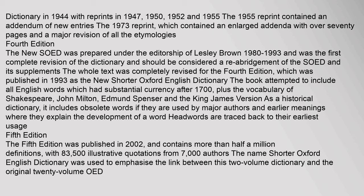The new SOED was prepared under the editorship of Leslie Brown (1980–1993) and was the first complete revision of the dictionary, and should be considered a re-abridgment of the SOED and its supplements. The whole text was completely revised for the fourth edition, which was published in 1993 as the New Shorter Oxford English Dictionary. The book attempted to include all English words which had substantial currency after 1700, plus the vocabulary of Shakespeare, John Milton, Edmund Spenser, and the King James version. As a historical dictionary, it includes obsolete words if they are used by major authors, and earlier meanings where they explain the development of a word. Headwords are traced back to their earliest usage.